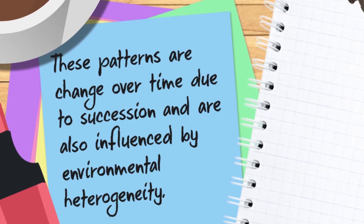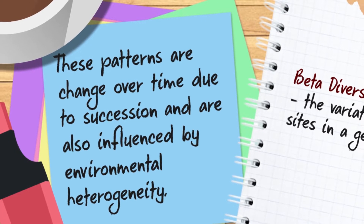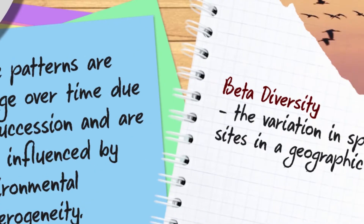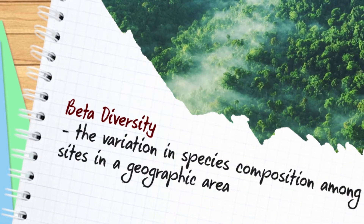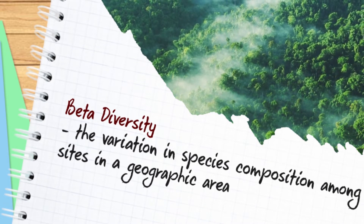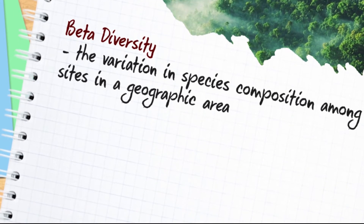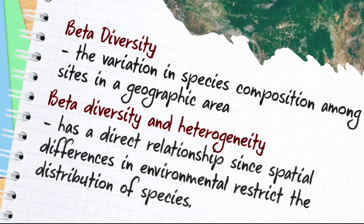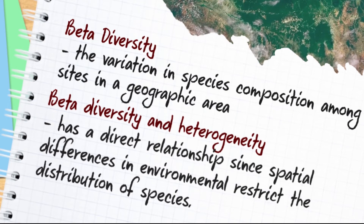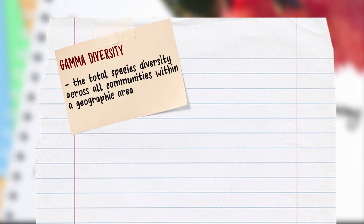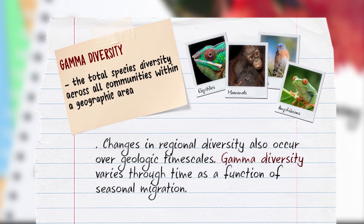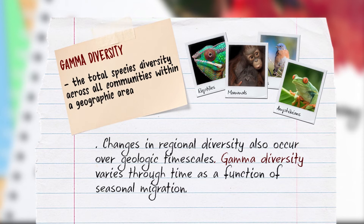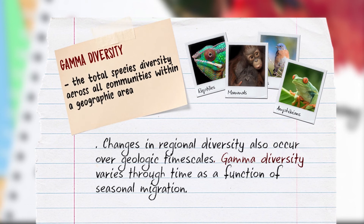These patterns change over time due to succession and are also influenced by environmental heterogeneity. Beta diversity is the variation in species composition among sites in a geographic area, and has a direct relationship with heterogeneity, since spatial differences in environmental conditions influence the distribution of species. The total species diversity across all communities within a geographic area is called gamma diversity, which varies through time as a function of seasonal migration and over geologic timescales.